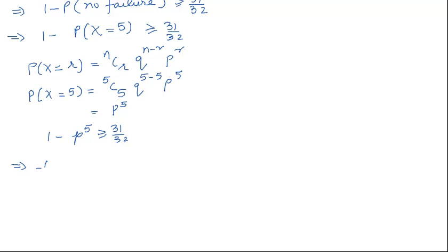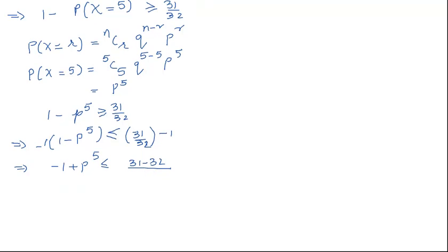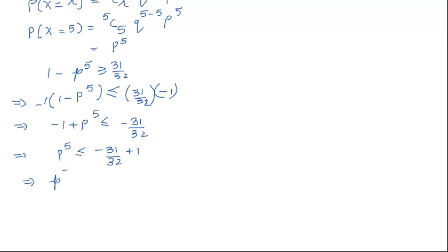Multiplying both sides by minus 1, the inequality gets reversed. This gives minus 1 plus p^5 less than or equal to minus 31 over 32, so p^5 is less than or equal to minus 31 over 32 plus 1. That results in p^5 less than or equal to (minus 31 plus 32) divided by 32, which gives p^5 less than or equal to 1 over 32.